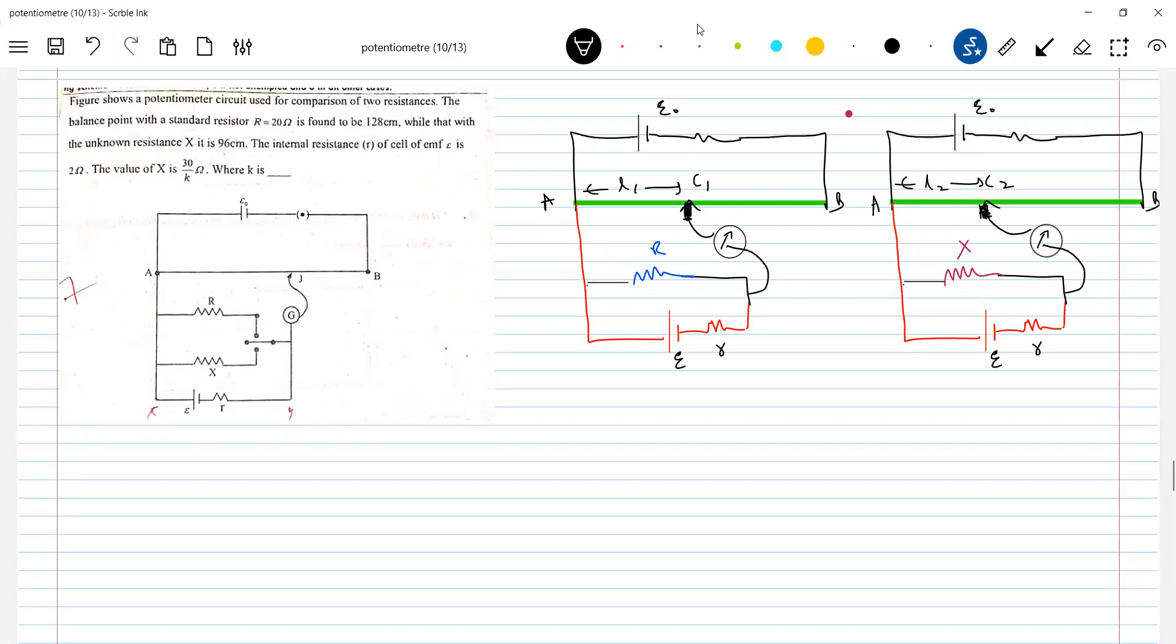How to find out the value of X? You see, we have only this much information. Previous problem, it was plenty of information there. Now we have only this much here. Again, for the same standard cell, this unknown EMF, we are not going to change.